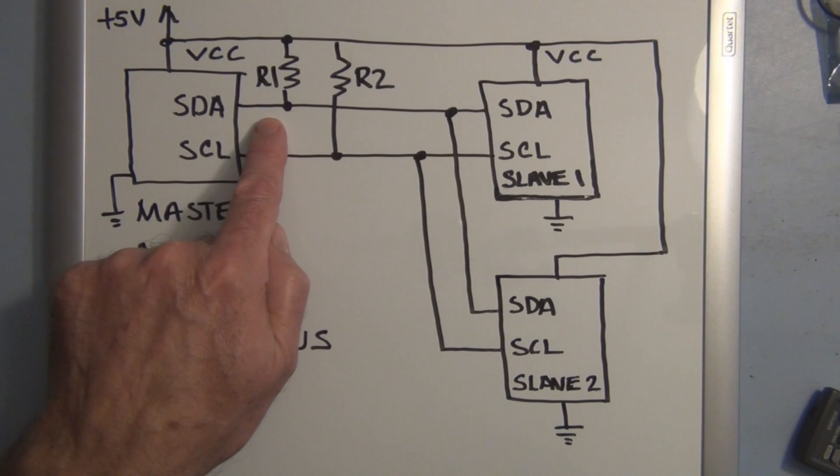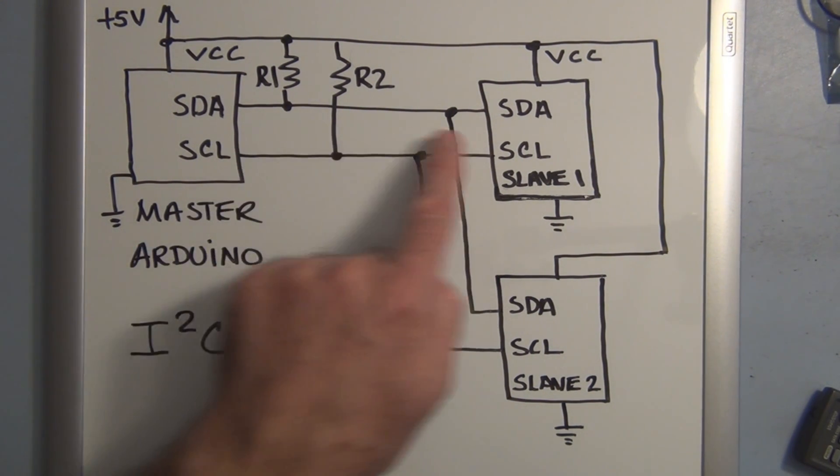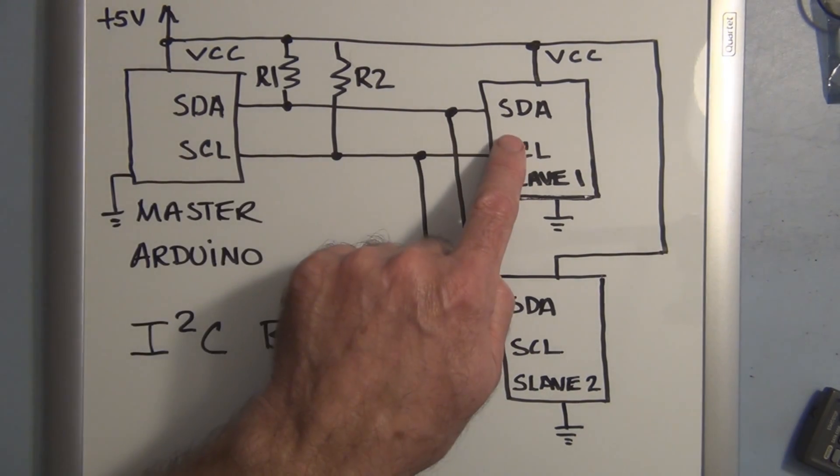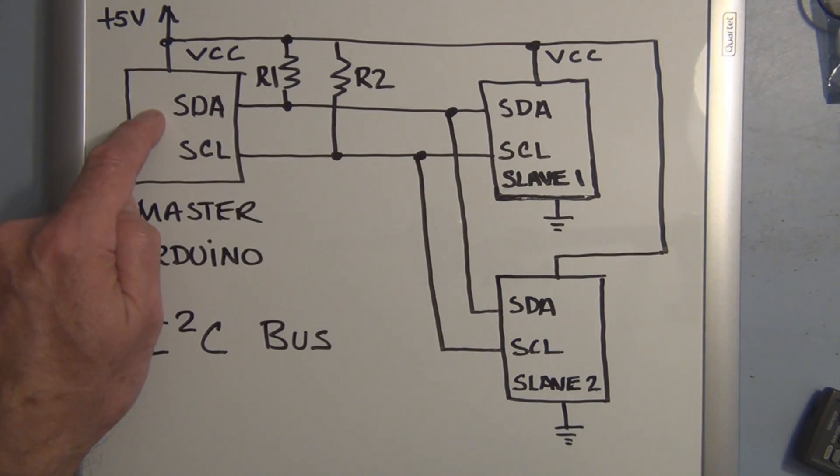And this is a bi-directional, two-direction communications line. So communication can go back and forth from the master to the slave and from the slave to the master.